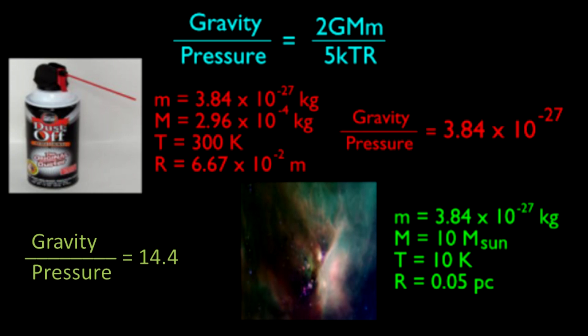It's just so stupid to compare a can of compressed air, or a cloud in the sky, to an interstellar cloud of gas and dust. The interstellar cloud is so much more massive than anything we are familiar with on Earth, and this incredibly high mass is enough to generate a gravitational field that is actually stronger than the gas pressure in the cloud.